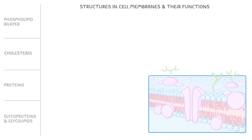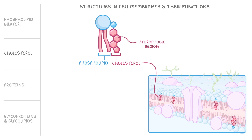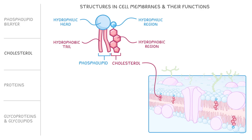Next, we have cholesterol, which sits between some of the phospholipids in the bilayer. Cholesterol can sit in the membrane like this because, like a phospholipid, it also has a hydrophobic region that binds to the hydrophobic tails of the phospholipids, and a hydrophilic region that binds to their hydrophilic heads.